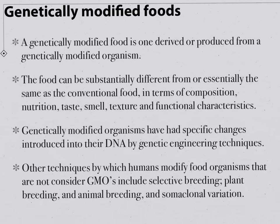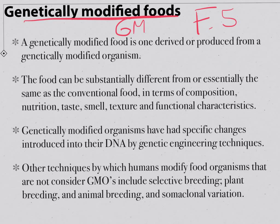This is F5 going through food chemistry, and F5 is looking at genetically modified foods. Our definition of a genetically modified food — and occasionally you'll see it called GMOs — is one that's derived or produced from a genetically modified organism.